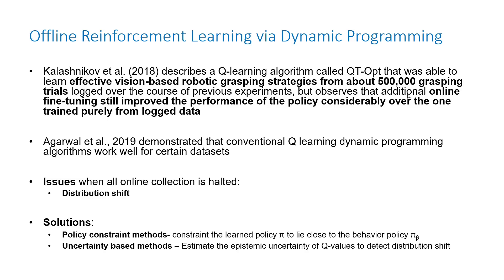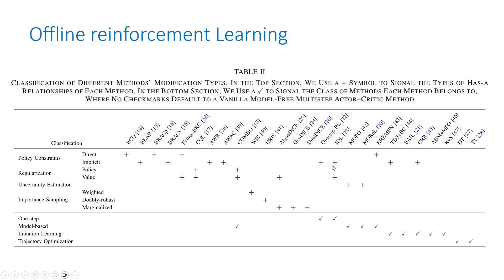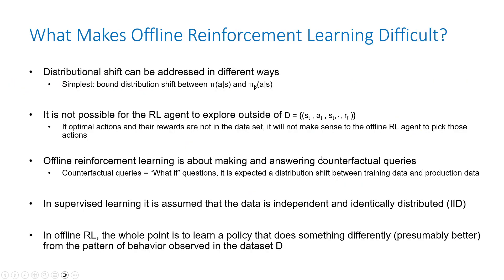Dynamic programming has been successful for robotics grasping problems with about 500,000 grasping trials, and online fine-tuning improved performance considerably after offline training. Agarwal in 2021 mentioned that conventional Q-learning dynamic programming worked well with certain datasets. Still, it suffers from distribution shift, but solutions include policy constraint (with the implicit version shown to be more effective) and uncertainty-based methods.